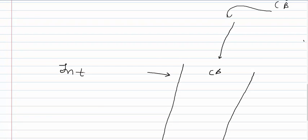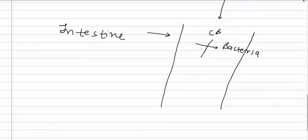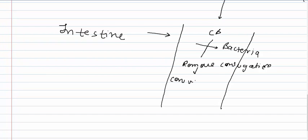This conjugated bilirubin is acted upon by bacteria present inside our gut. The bacteria degrade the UDP, removing the conjugation. After removal of the conjugation, this conjugated bilirubin converts into a component known as urobilinogen.